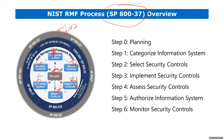When we get to step two — selecting controls — we will touch upon FIPS 200 and NIST SP 800-53.